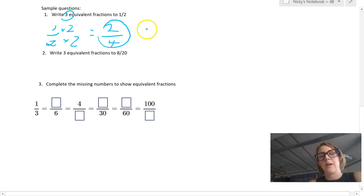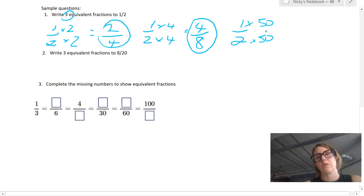So two quarters or two fourths is an equivalent fraction to a half. I could times the numerator and the denominator by four. And that would give me four over eight. So that is an equivalent fraction. Or I could times it by 50. The key is that it has to be the same, the top and the bottom. So that would give me 50 over 100. And that would be an equivalent fraction.